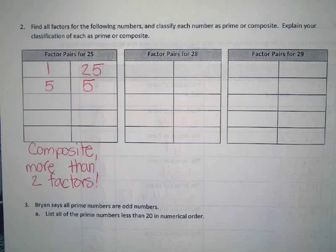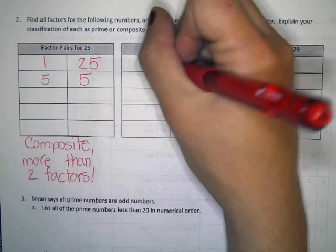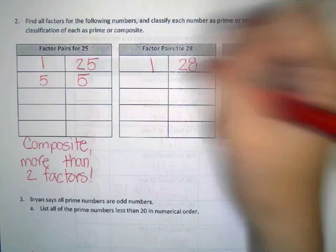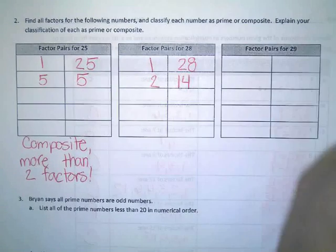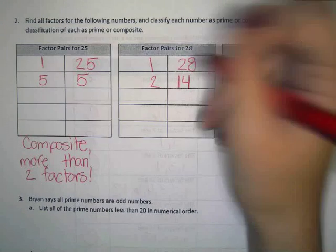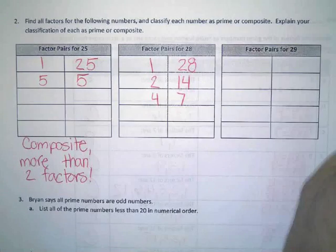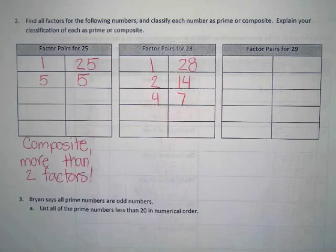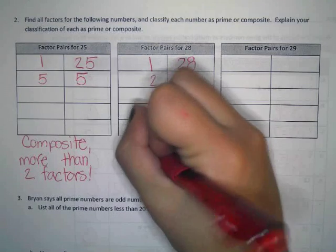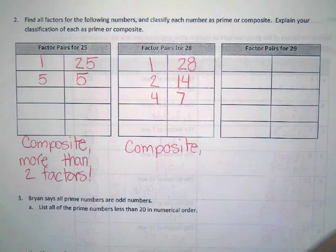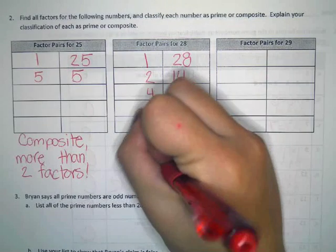Let's do 28. I'm going to start with what we always know, which is 1 and 28. 2 and 14. 3 and anything? No. 4 and 7. 5 and anything? No. 6? No. So is it prime or composite? Composite. What's our reasoning? More than two factors.